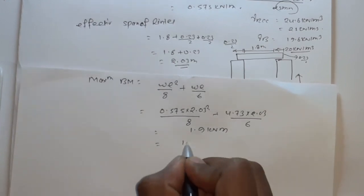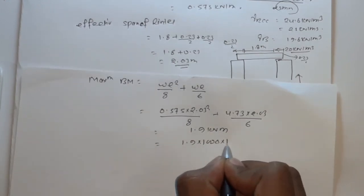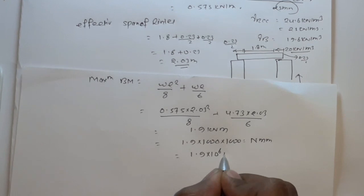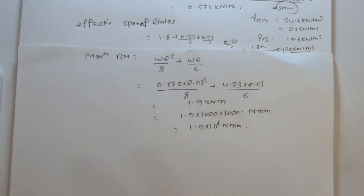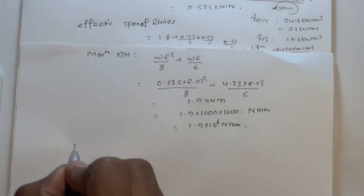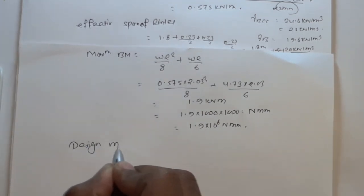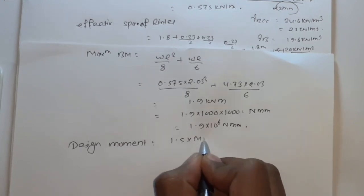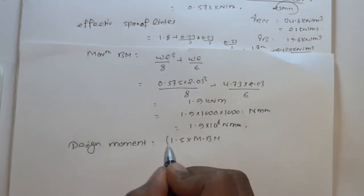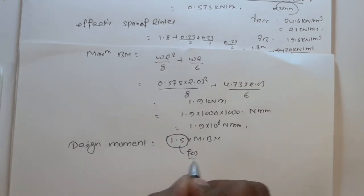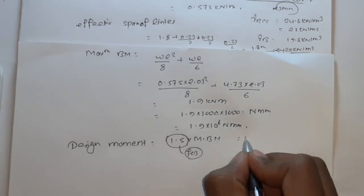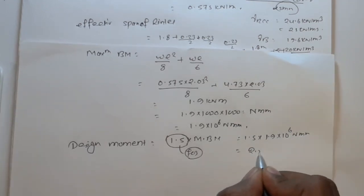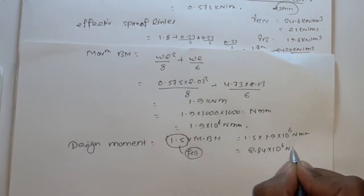The maximum bending moment is 1.9 kN·m, which equals 1.9 into 10⁶ N·mm. The design moment is obtained by multiplying by the factor of safety 1.5. So design moment M₀ equals 1.5 into 1.9 into 10⁶, which gives 2.84 into 10⁶ N·mm.